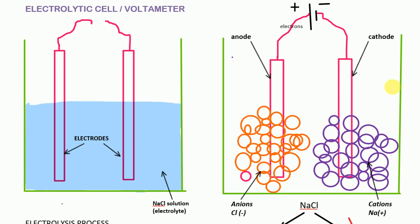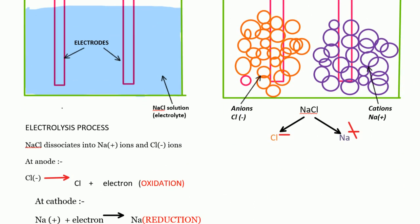Since there is a potential difference due to the positive and negative electrodes, the NaCl solution will get dissociated into its ions — that is, NaCl will break down into Na⁺ ions and Cl⁻ ions.